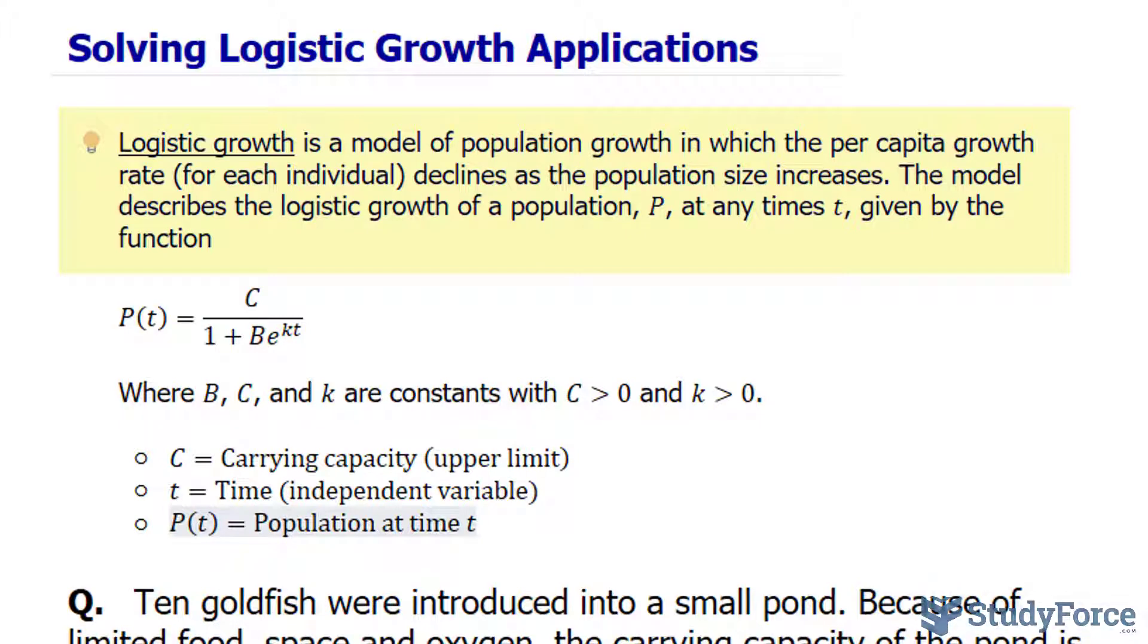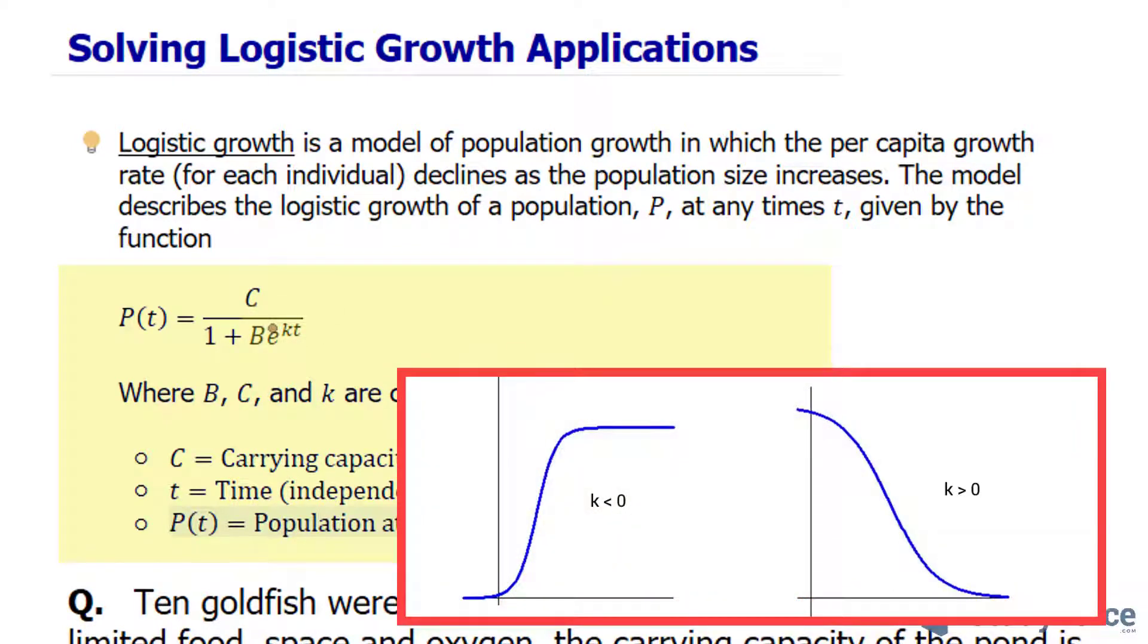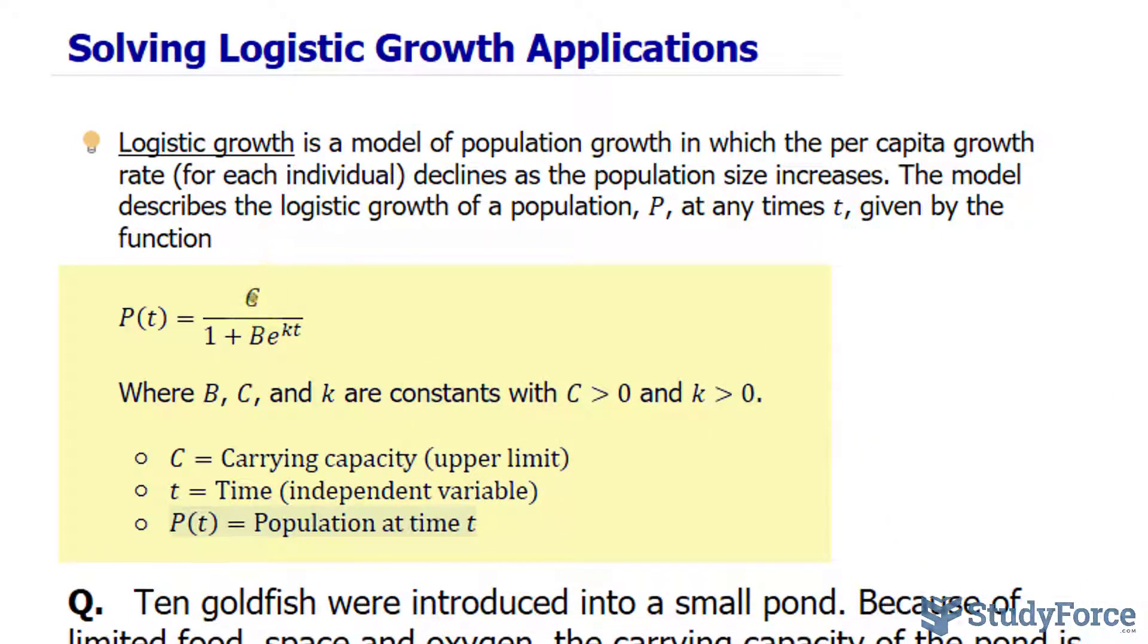The model describes the logistic growth of a population P at any time t given the function shown underneath, where C, B, and K are constants and they change depending on the information provided by the other variables. The variable C represents the carrying capacity, which is the upper limit or maximum of the function, t represents the time, and this variable represents the population at any time.